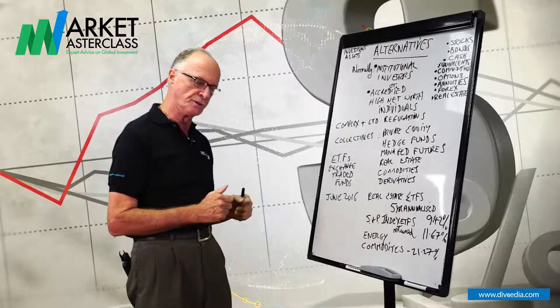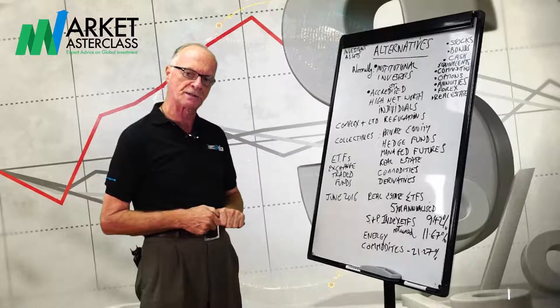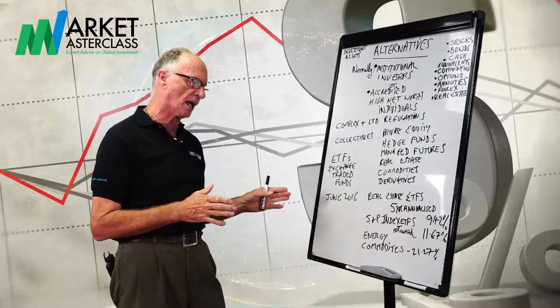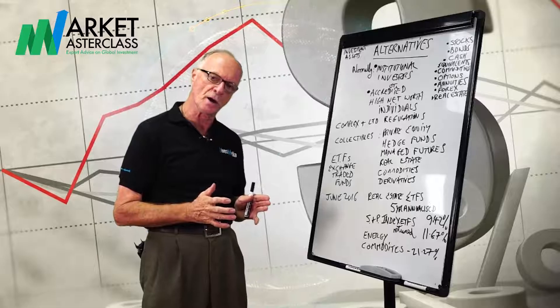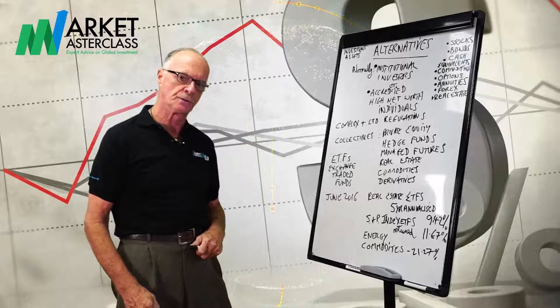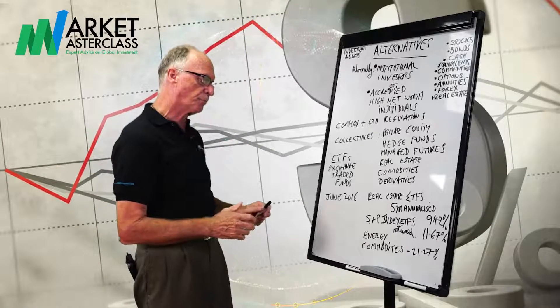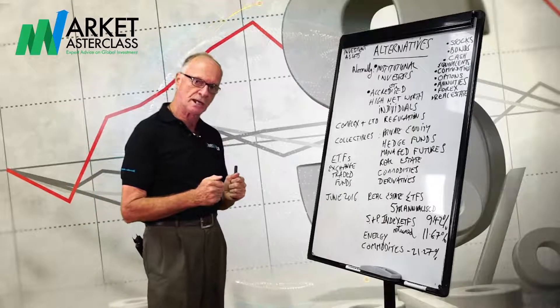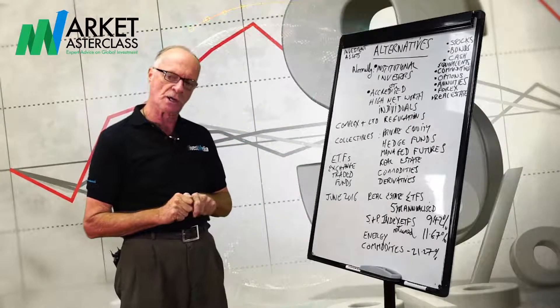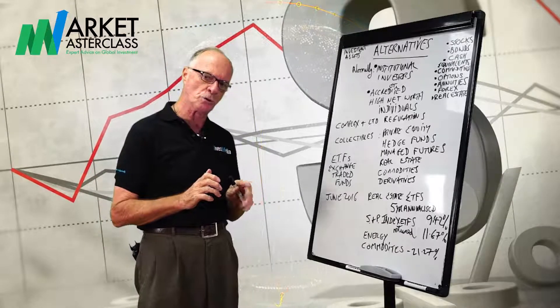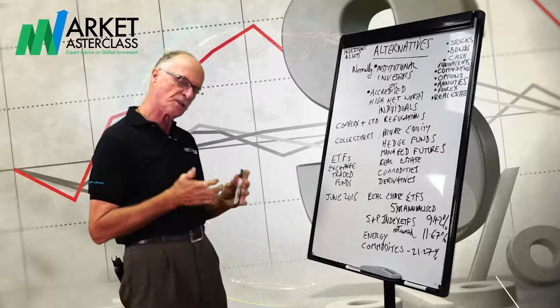Since June 2016, real estate ETFs over five years annualized have returned over 9%. S&P index ETFs, that's just following the S&P index, have returned over five years an annualized return of over 11%.